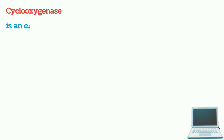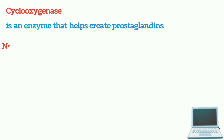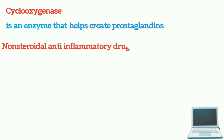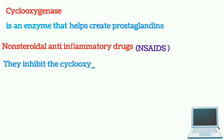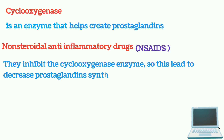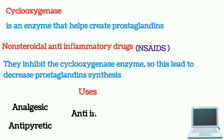Cyclooxygenase is an enzyme that helps create prostaglandins. Non-steroidal anti-inflammatory drugs — this group of drugs inhibit the cyclooxygenase enzyme, which leads to decreased prostaglandin synthesis, and this shows the uses of non-steroidal anti-inflammatory drugs.